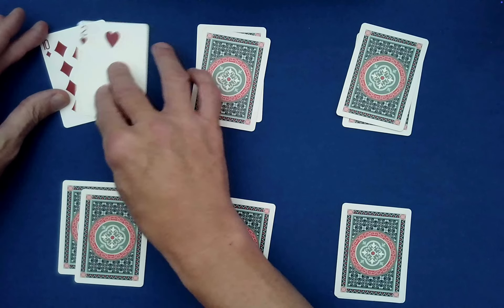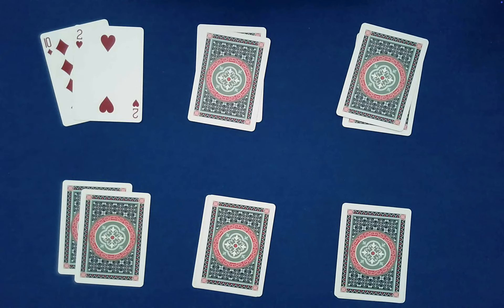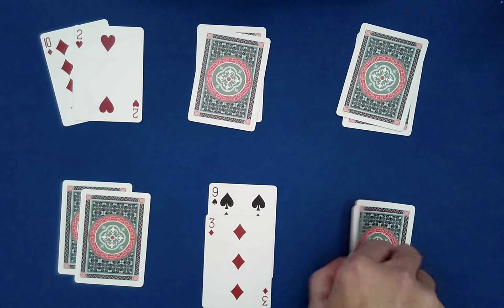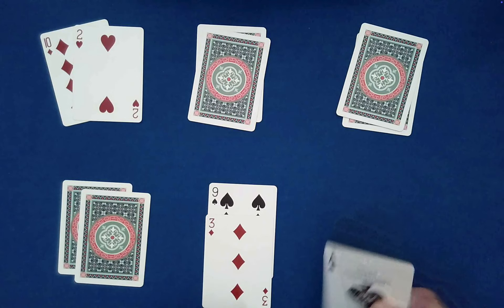So let's see how it worked out here. 10 and 2, that's 12. What about down here? 9 and 3 is 12. Jack—Jack counts as 11—plus 1 is 12. What about over here? Of course, 6 and 6, that's 12. 5 plus 7 is 12, and 4 plus 8 is 12. Whoa, how in the world did we do that working together?